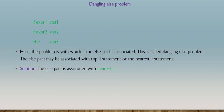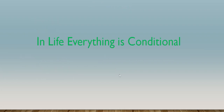We already discussed the dangling else problem. The ambiguity is about which if the else is associated with. The solution is that the else part is associated with the nearest if. That is called the dangling else problem. Thank you very much for joining.